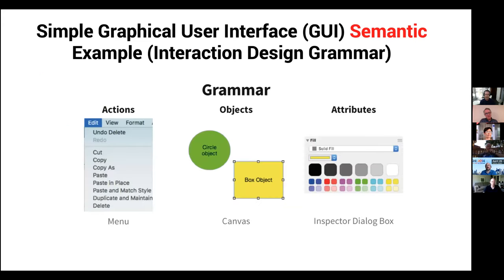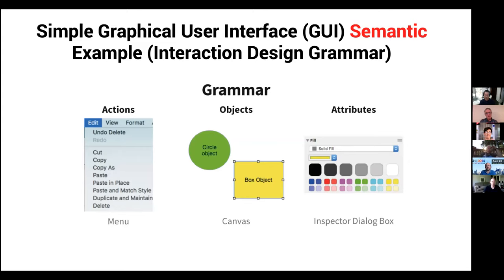We start by defining grammar. In a graphical user interface, grammar would be thought of as objects and actions. We generally see actions in pull-down or context menus. Objects are things we select and act on — they can be somewhat tangible, like in a canvas of a drawing program, or a little more theoretical. Objects always have a set of attributes. This is basically the foundation that got us from command line interfaces to graphical interfaces back at Xerox PARC.